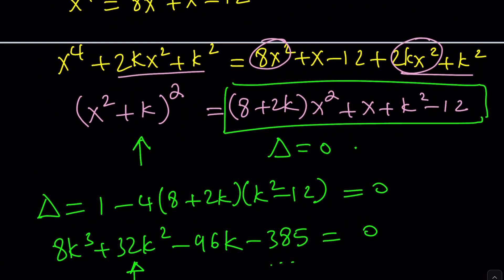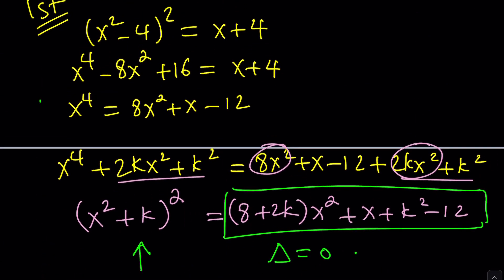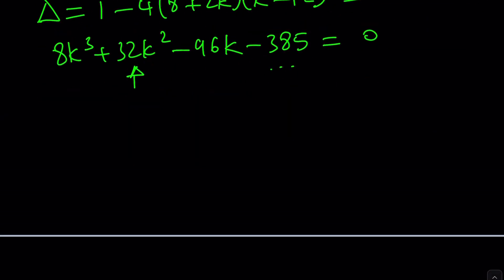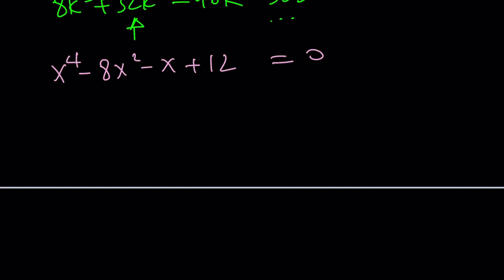The other approach is to deal with the quartic directly. Let's write it in full form: x to the fourth minus 8x squared minus x plus 12 equals 0. Notice there's no x cubed term, which makes this a depressed quartic — it's a little easier to solve for that reason.